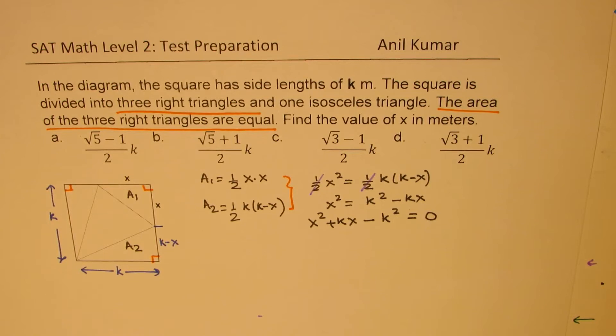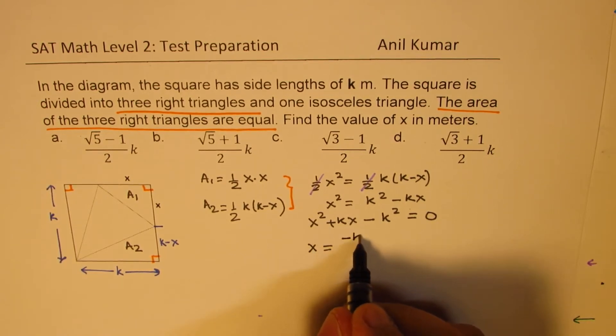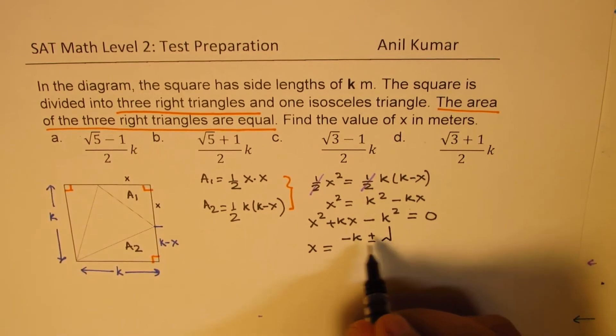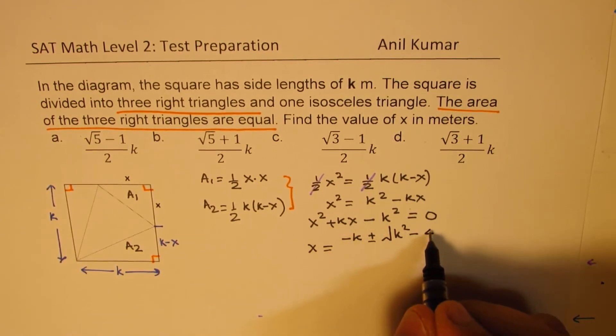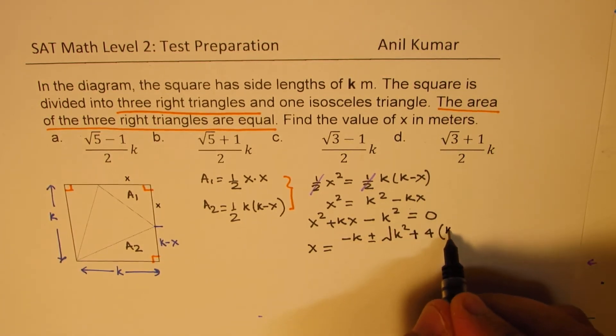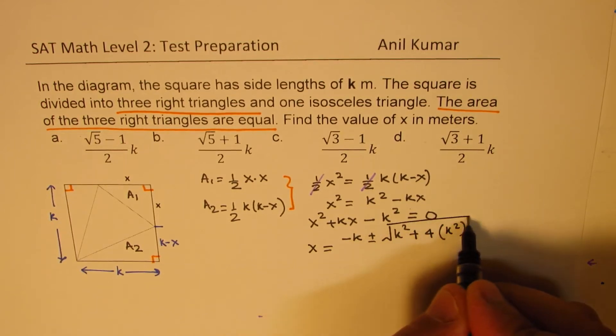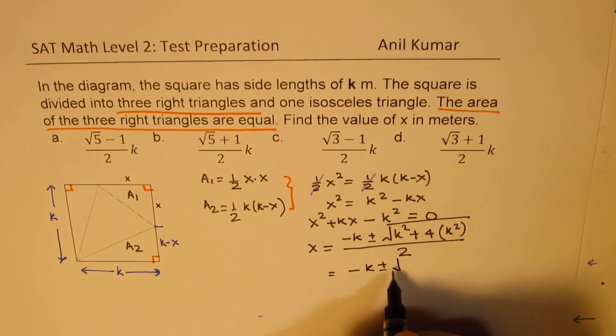Now k is a constant. You could be given any length, right? Now we can apply the quadratic formula to find the value. So x will be equals to minus k plus minus square root of b square, which is k square, minus 4ac. That means 4 times ac, right? So c in this case is negative, so that makes it positive k square, divided by 2.